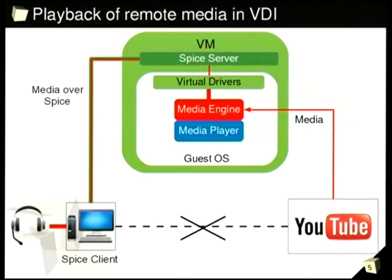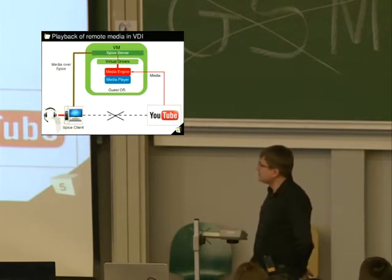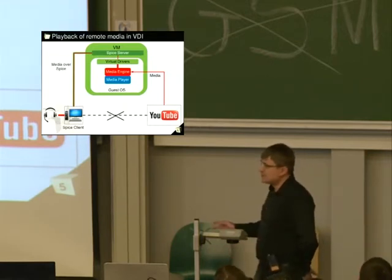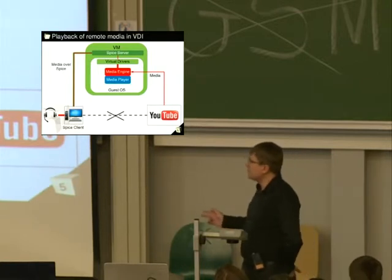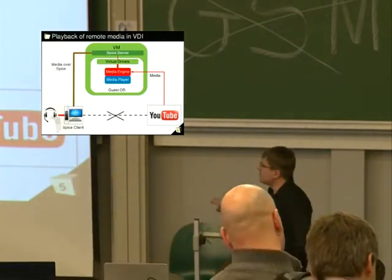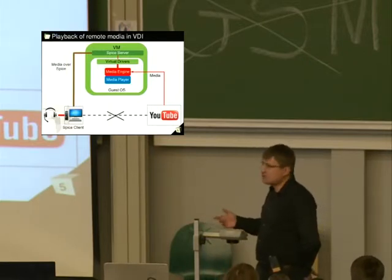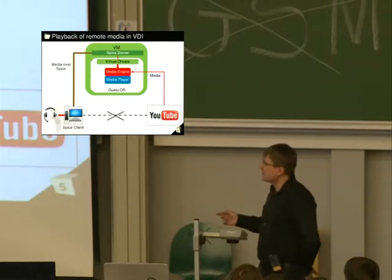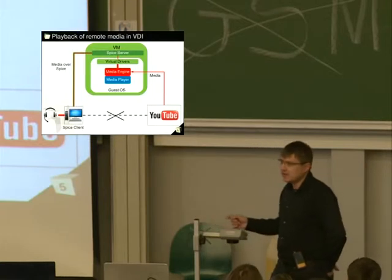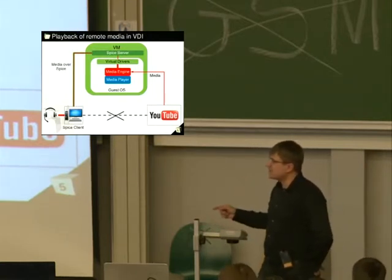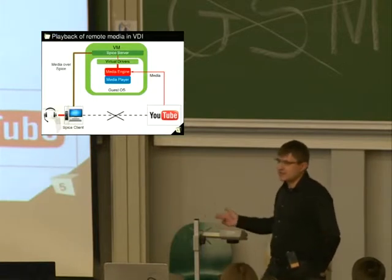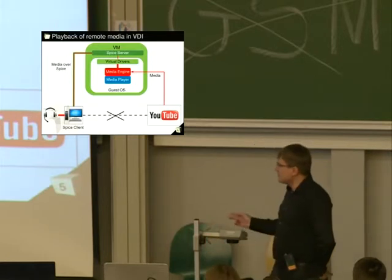So let's look at how the playback of remote media happens in the VDI and what problems we can see here. Here we see the virtual machine and the simple media player installed there, with the media engine component highlighted in red. When a user wants to play YouTube on his virtual machine, it connects probably via HTTP. The player connects and the media is played locally by that player and decoded into the virtual devices and drivers. They handle it and get it to the Spice server, which then encodes once again. And the media is then transferred over a Spice channel to the Spice client and then once again decoded and played out. So we see that it is not very efficient.